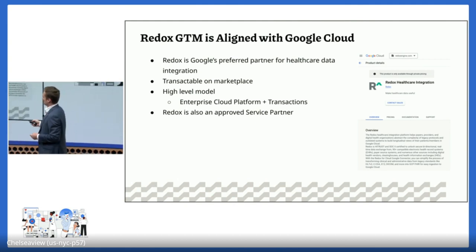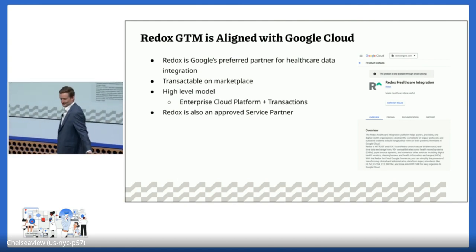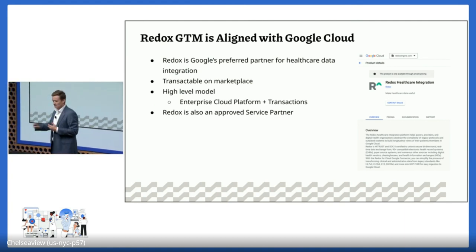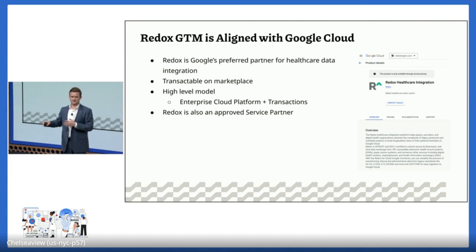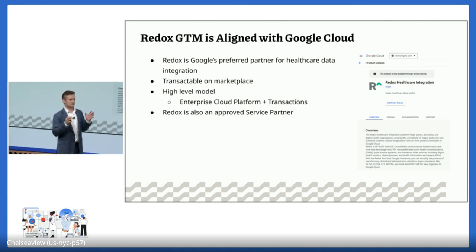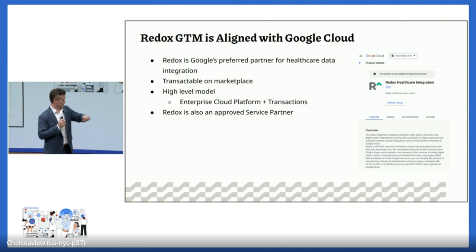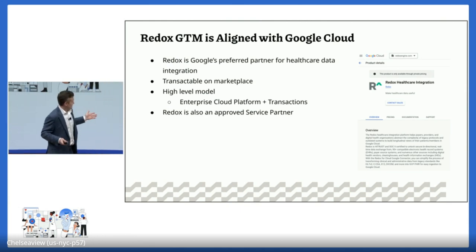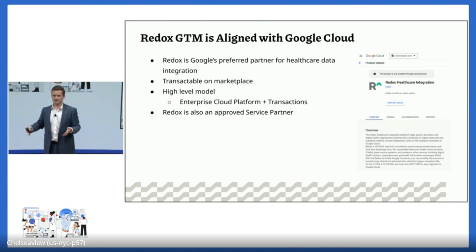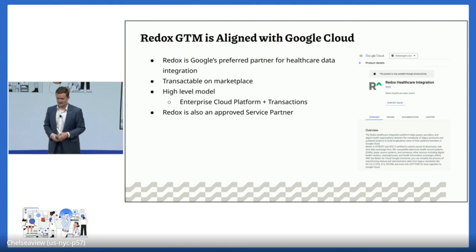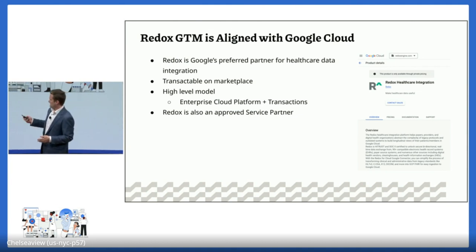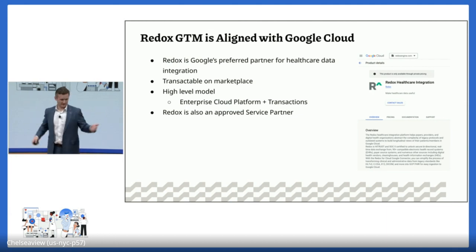We're aligned just like everybody else — you can purchase Redox through Google Marketplace. Redox is also a sales and service partner through our professional services org, so if you engage with Redox professional services you can transact that way as well. The technology runs through Google Marketplace and runs on GCP — it doesn't run in your tenant but posts to your GCP tenant. Our high-level model is a platform license plus usage transactions, so you can start small and grow. If you need to talk to us, you can contact sales on our website, or come talk to the three of us standing outside.